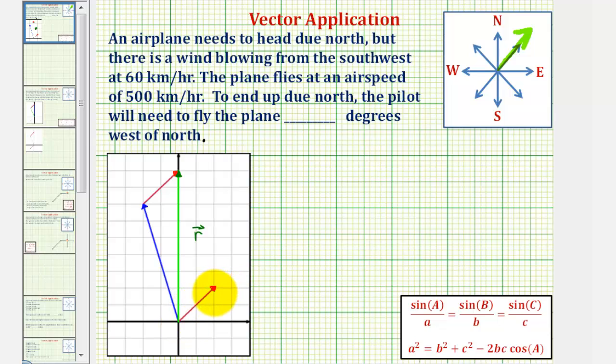Again, because the wind is blowing out of the southwest, so we can call this vector w. But because the wind is blowing at 60 kilometers per hour, the magnitude or length of this vector would be 60.